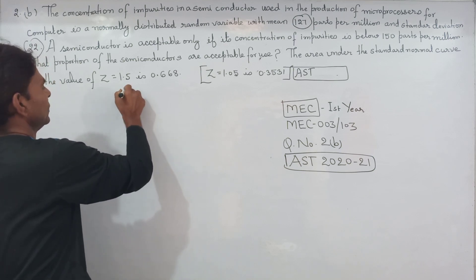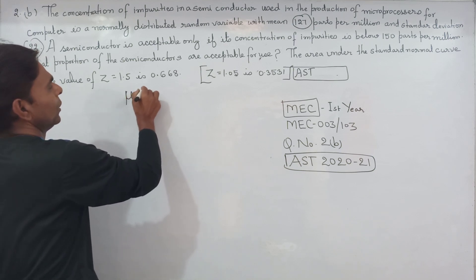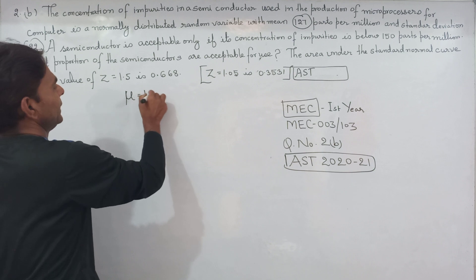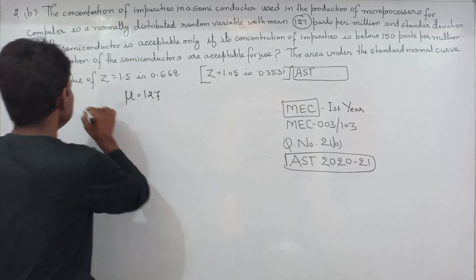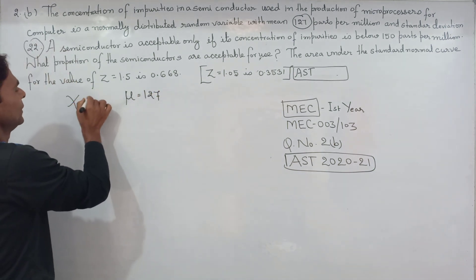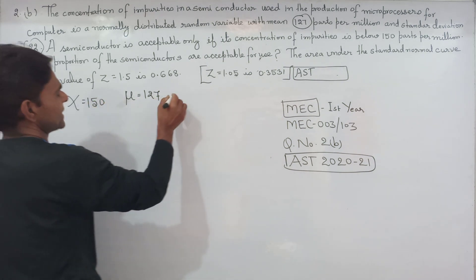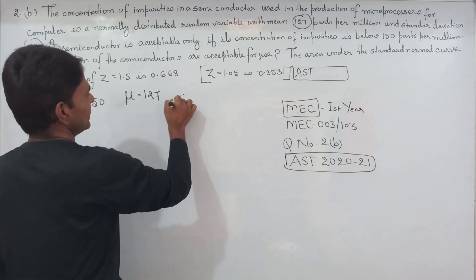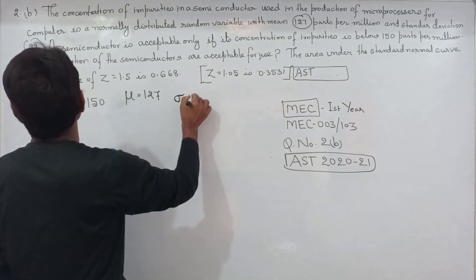So, we have a normally distributed random variable with mean mu equal to 127 and standard deviation equal to 22.